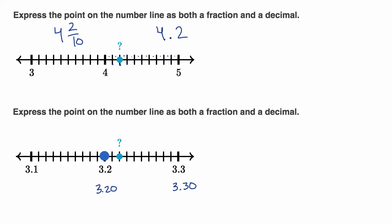And so this is three and 20 hundredths, this is three and 21 hundredths, three and 22 hundredths. So this point right over here is three and 22 hundredths. And of course, you could also write that as a mixed number, that is three and 22 over 100.